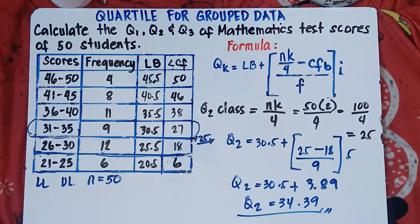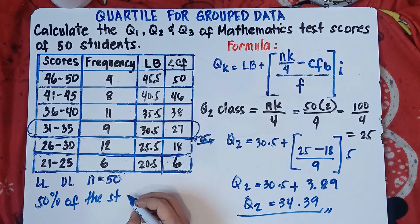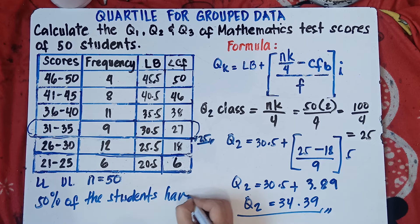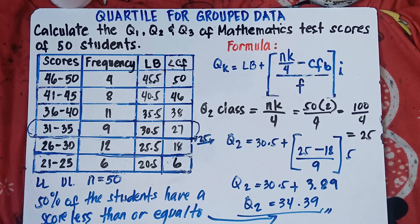For our conclusion: 50% of the students have a score less than or equal to 34.39. If you're looking for the second quartile, it means 50%. All set for the second quartile.